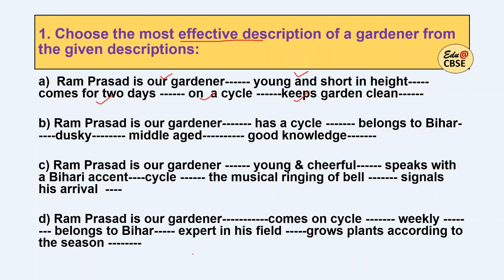Now what is the difference? All seem correct. But in Option C we have a character trait — cheerful, young — covering his physical and age details. He speaks with a Bihari accent, and the musical ringing of the bell appeals to the sense of hearing and signals his arrival. So Option C gives us many things that appeal to the senses, whereas the others just list plain details like 'he is an expert' or 'grows plants according to the season.' Therefore, our answer is C. This is how you rule out options and arrive at the most appropriate one.